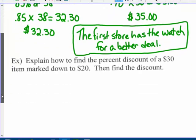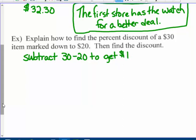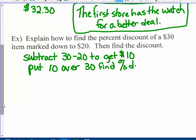Last question: Explain how to find the percent discount of a $30 item marked down to $20. Subtract 30 minus 20 to get $10. Put $10 over the original $30 and find the percent.